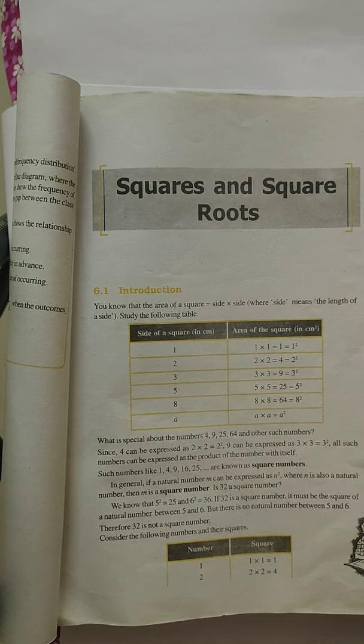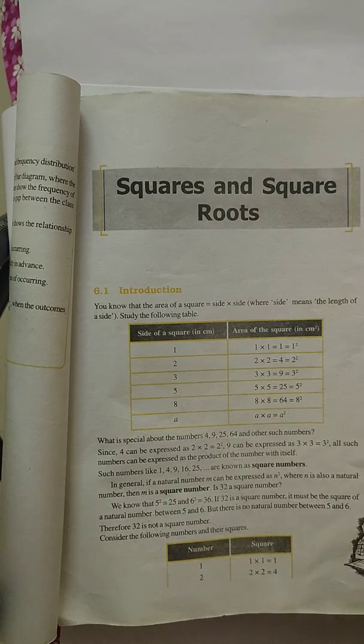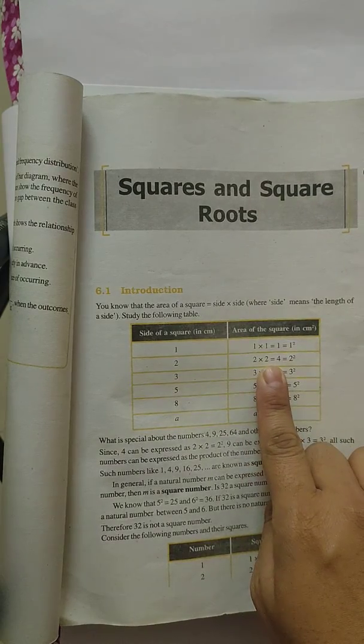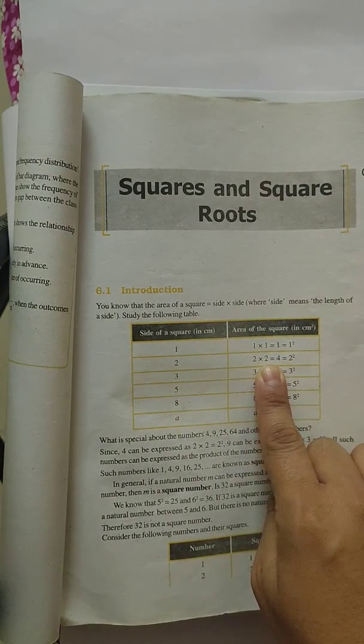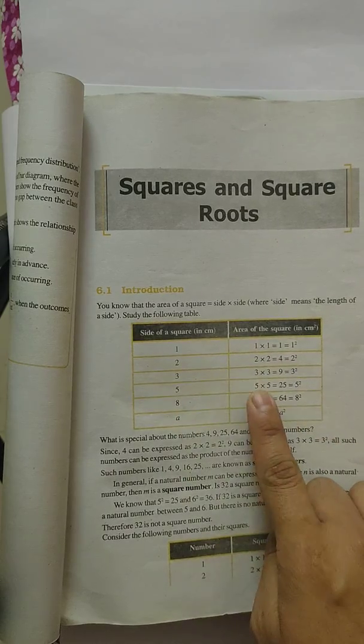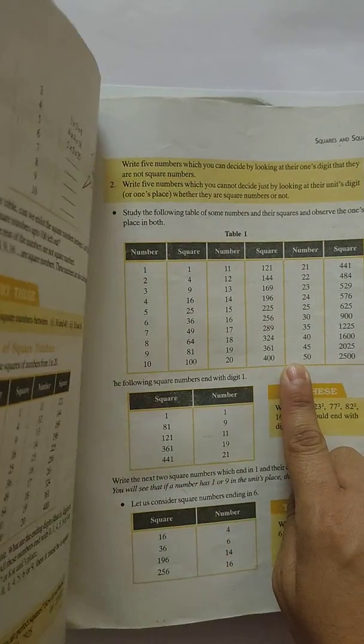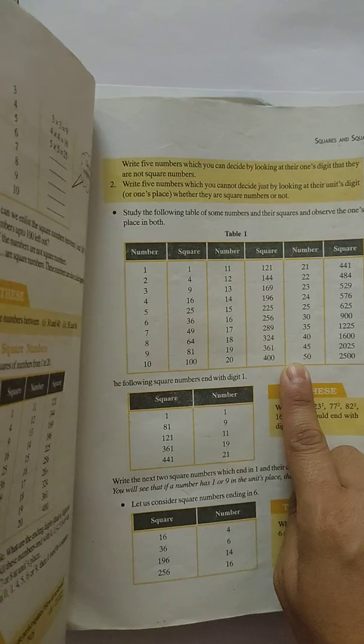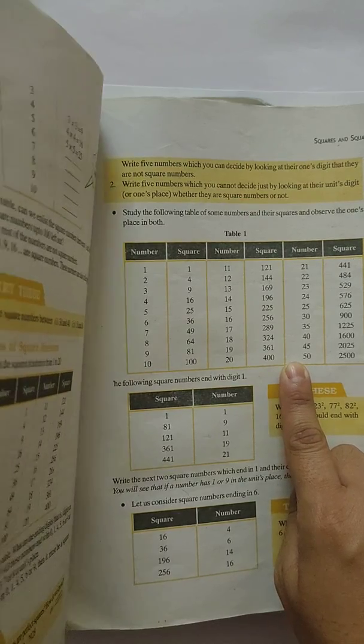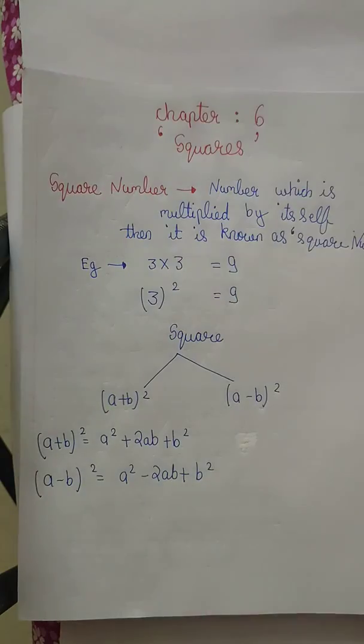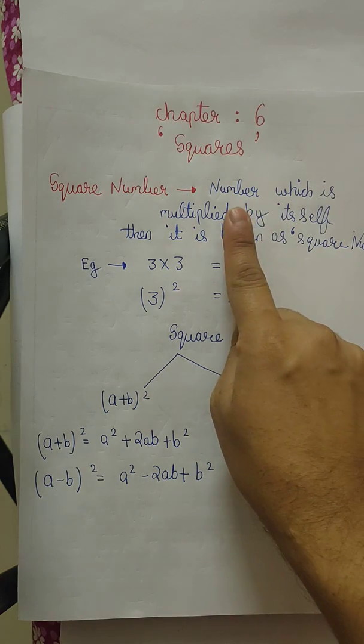Chapter number six: Square. What do you mean by square? A square of a number is basically a number which is multiplied by itself. For example, 5 ka square, 5 multiply by 5 gives 25. In your book, squares up to 50 are given, so go and have a look at that and learn at least 25 squares.